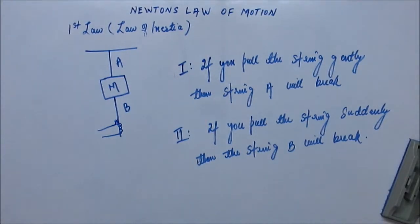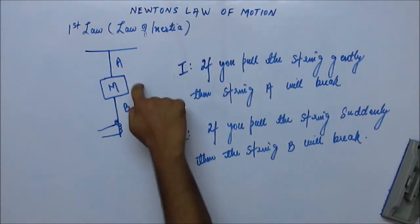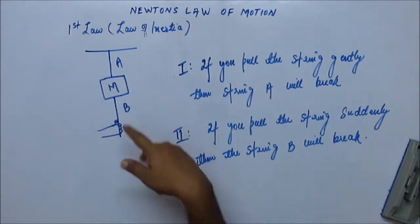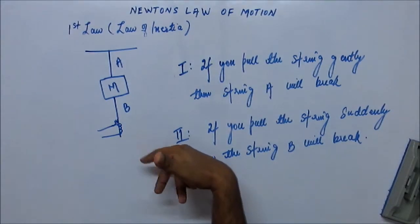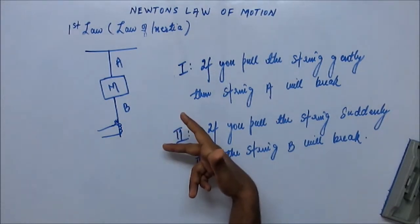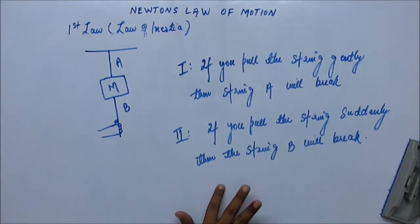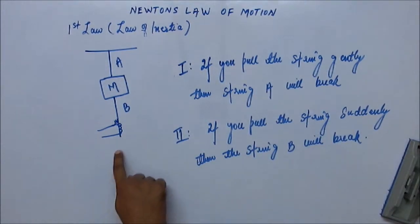So if you are pulling the string suddenly and there is a mass which has some inertia, then it won't allow the force to get transmitted through it because that takes time. So there is the key to answer this. If you are pulling it suddenly, the force is not going to be transmitted through a mass having some inertia. So, string A is not going to feel the force. Actually, that's the point.